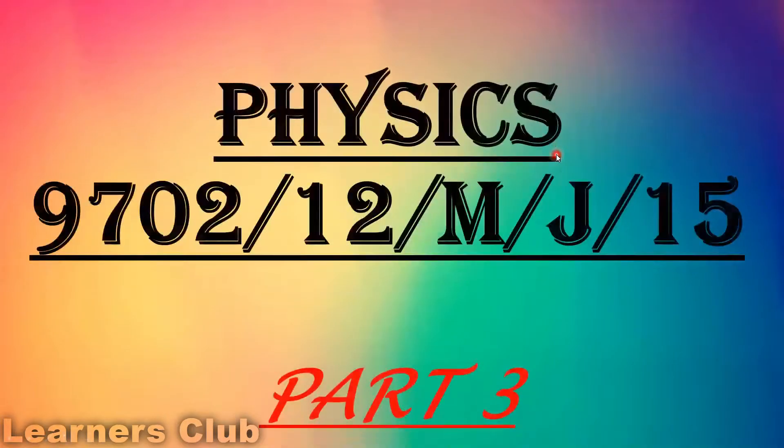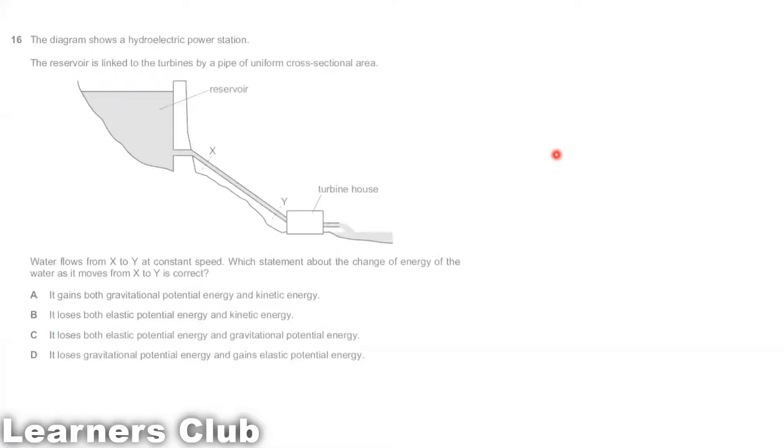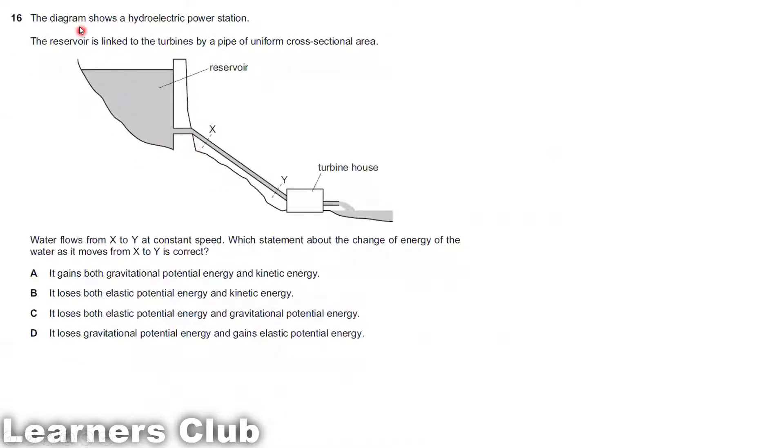Part 3 May-June 2015 Paper 12, Question 16. The diagram shows a hydroelectric power station. The reservoir is linked to the turbines by a pipe of uniform cross-sectional area. Water flows from X to Y at constant speed. Which statement about the change of energy of the water as it moves from X to Y is correct?